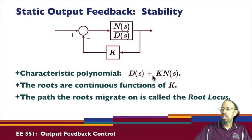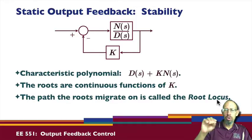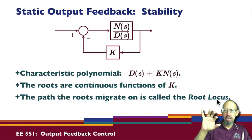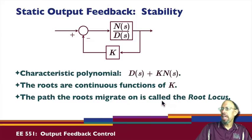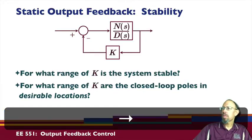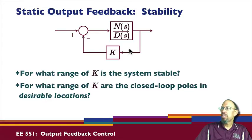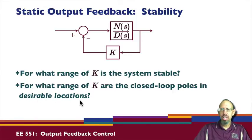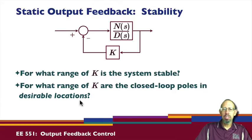As k varies, the poles or roots of the polynomial move smoothly — for one value of k you get a certain set of poles, and for a slightly bigger value they don't jump, although they can move rather quickly in some cases. An important question is: for what range of k would this system be stable? Another question is: for what range of k are the closed loop poles in desirable locations? That brings us back to the issues of robustness and performance.